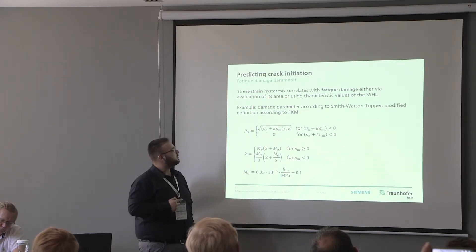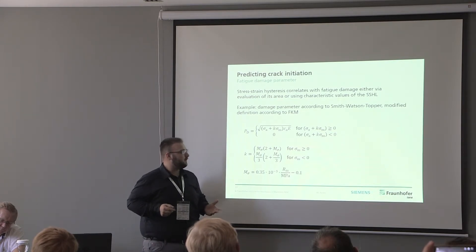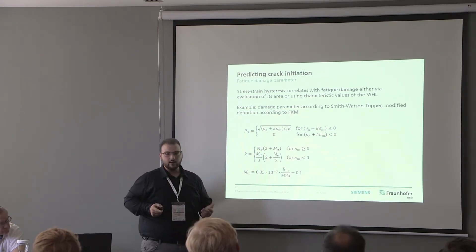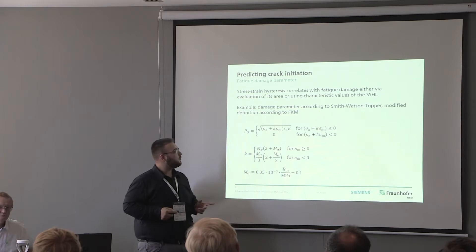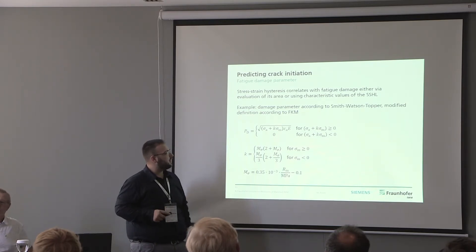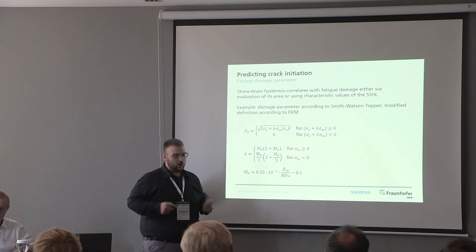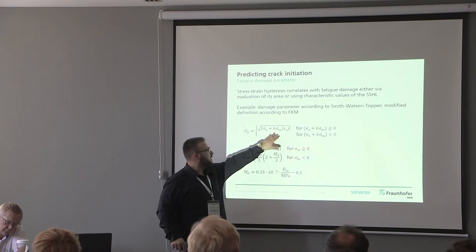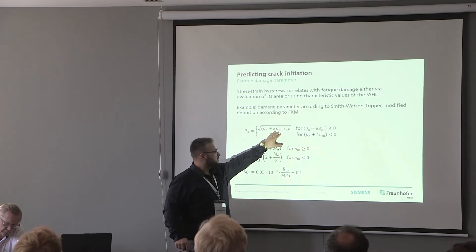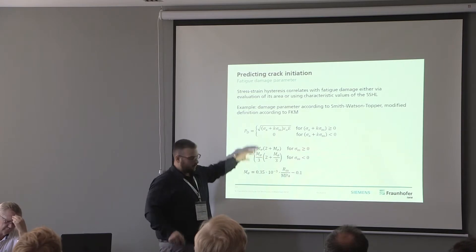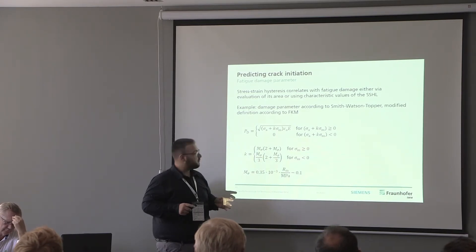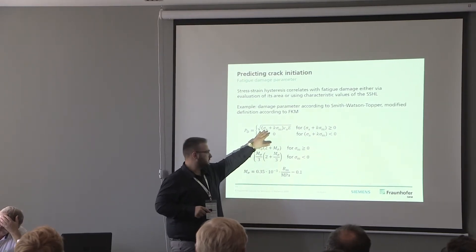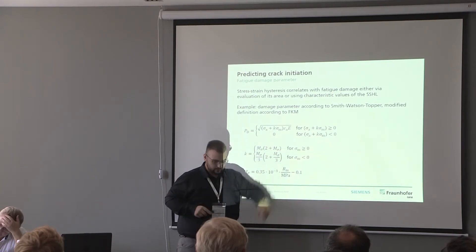The damage parameter correlates with fatigue damage either via evaluation of its area or using characteristic values of the stress-strain hysteresis loops. In our example we have a strain ratio of minus one, so we can use a modified definition of a damage parameter according to the FKM guideline. With no effect of mean stress, our SWT parameter P_SWT is the square root of stress, strain, and the Young's modulus.